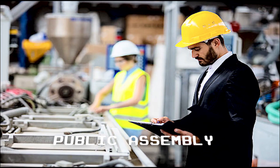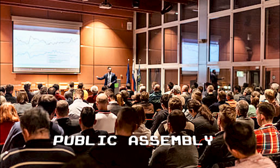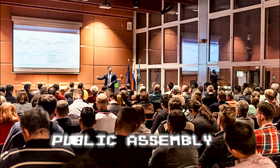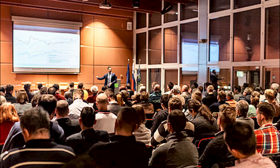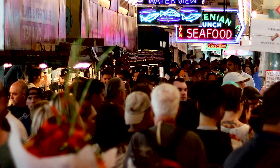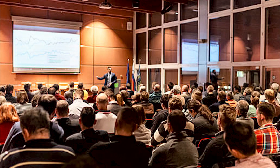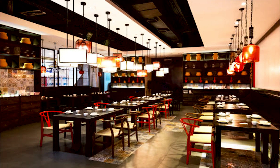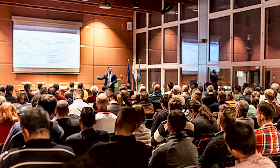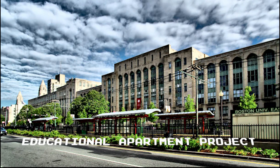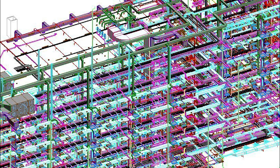The second is the public assembly project, which are projects designed for a space where people gather for a specific purpose. Such a space must be able to occupy more than 50 people at a time. This includes restaurants, auditoriums, theaters, stadiums, etc. We also have educational projects, which are projects solely designed for buildings serving an educational purpose.